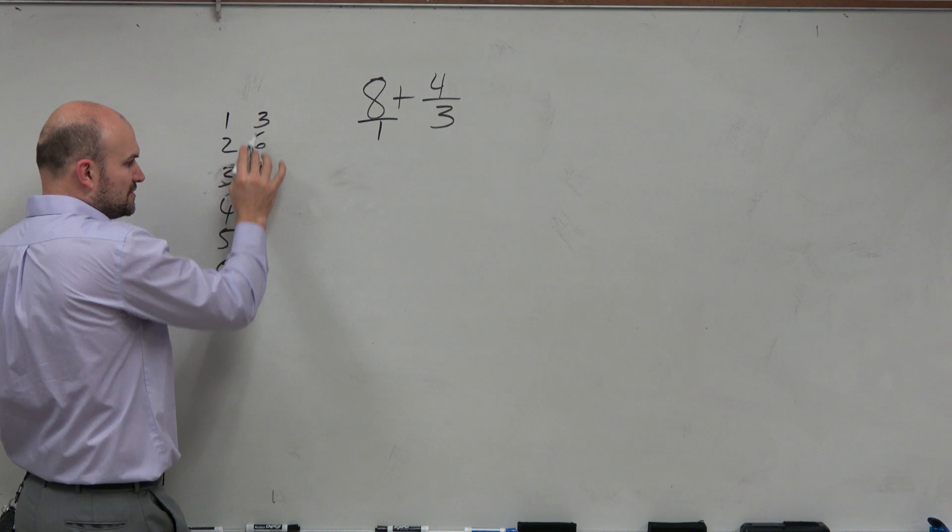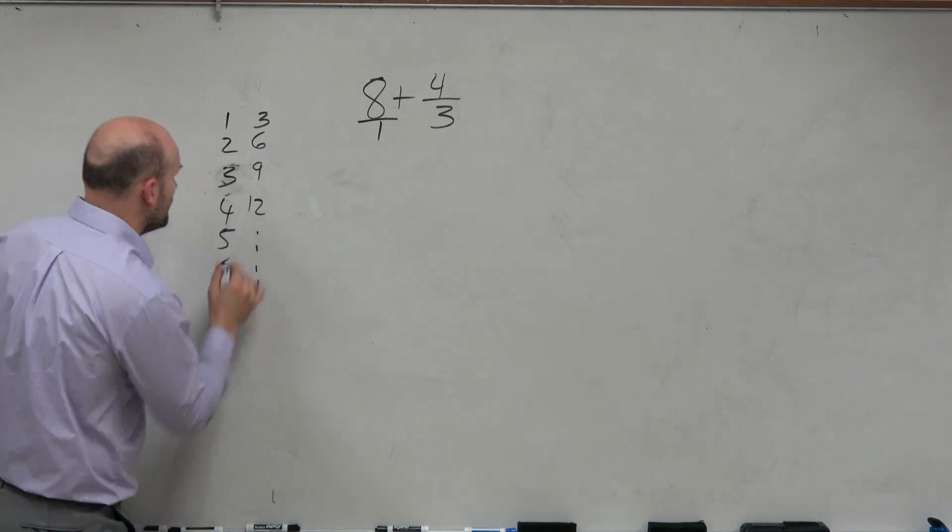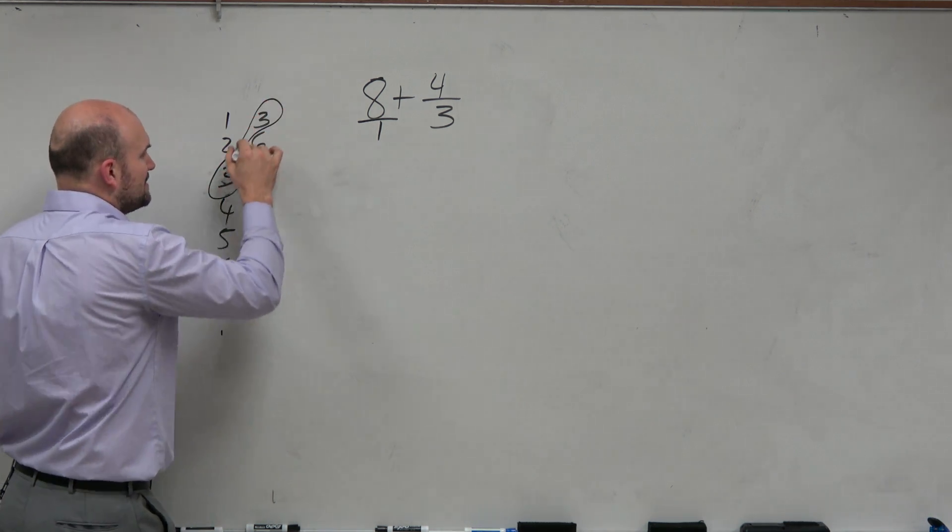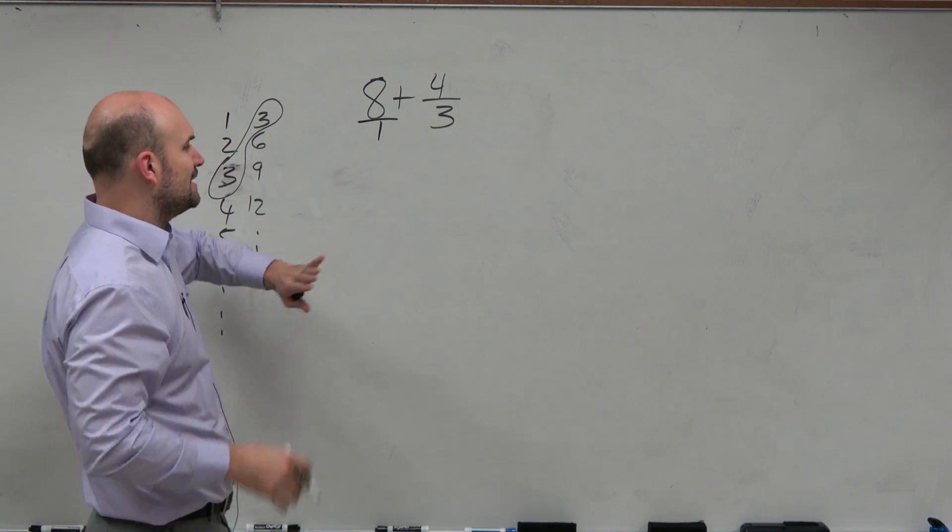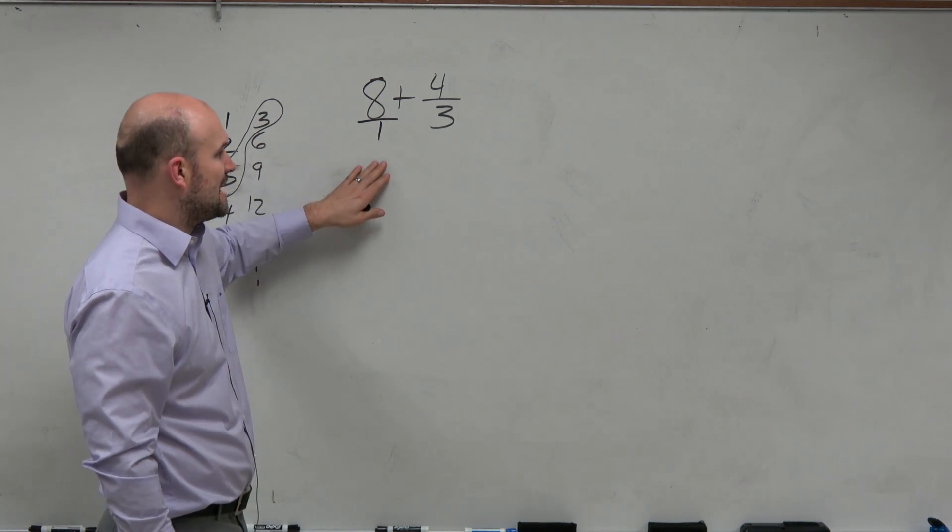These are the multiples of 1. Those are the multiples of 3. And what we see is the smallest common number, or the least common multiple, is 3. So what we want to do is make sure that both of our denominators are 3.